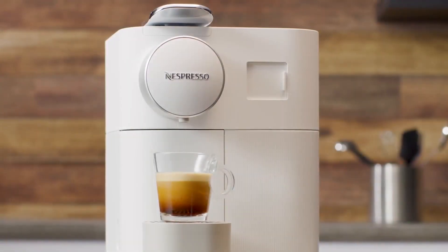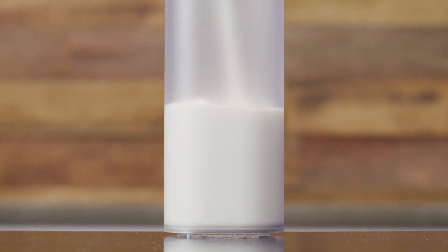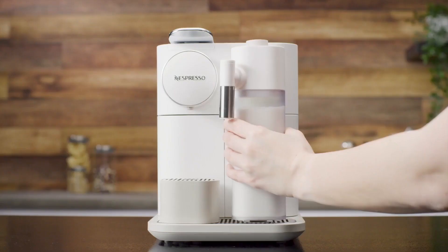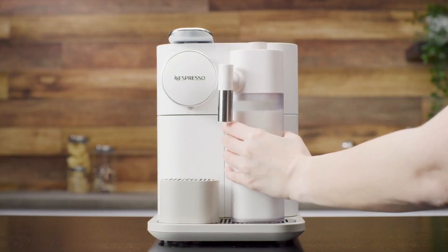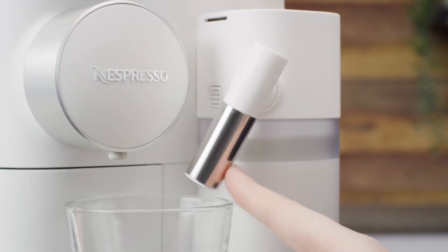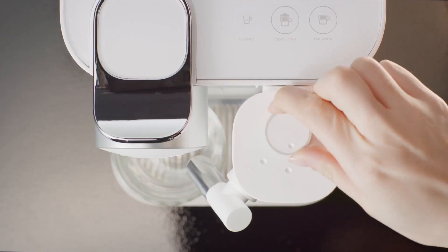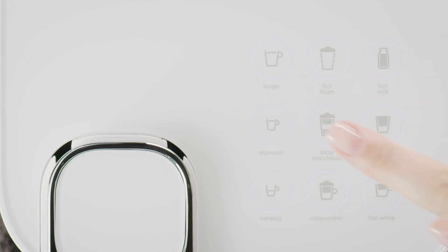The hard-working appliance also comes equipped with an integrated frother and a built-in, modern milk hopper that can be detached and stored in the fridge. When you're done, it's perfectly safe to pop the milk jug in the dishwasher. Plus, the rinsing system is a breeze.